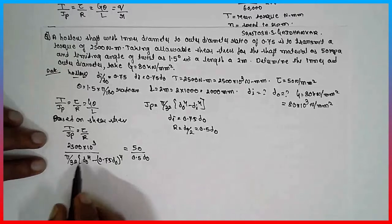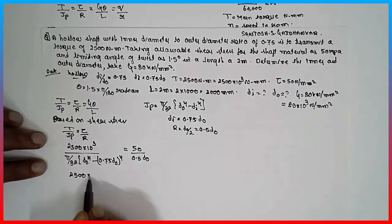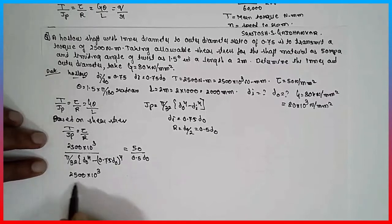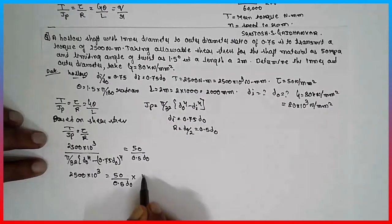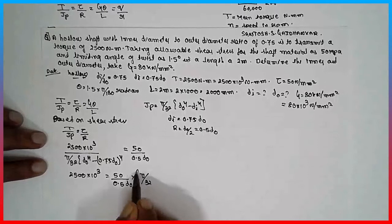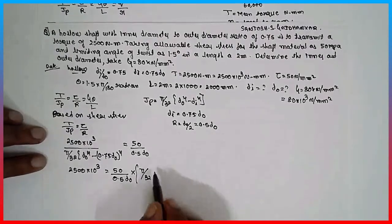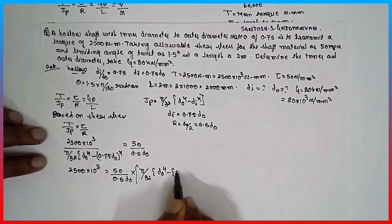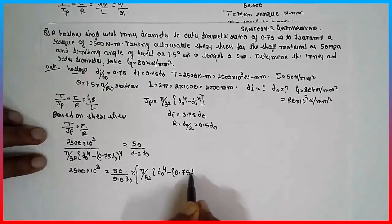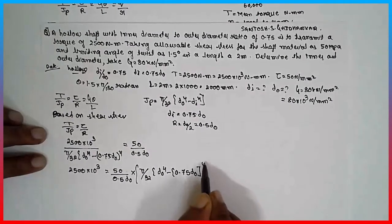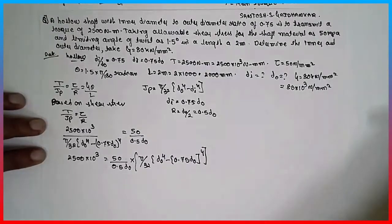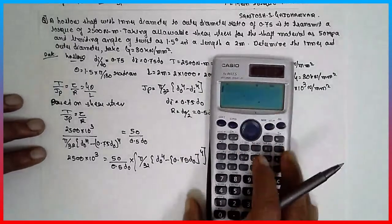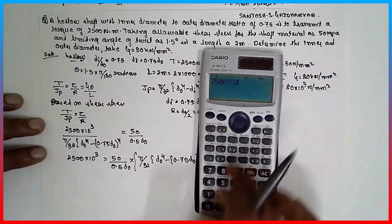Bring the unknown to this side. 2500 × 10³ equals 50 divided by 0.5·Do, times pi/32 times (Do⁴ minus 0.75·Do⁴). Open the bracket: Do⁴ minus 0.75·Do⁴. Now find the outer diameter.